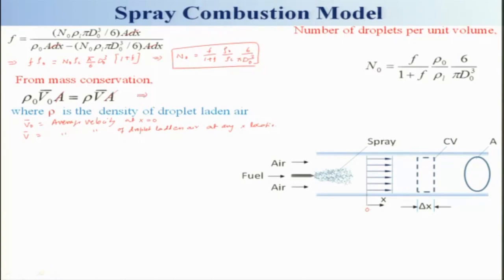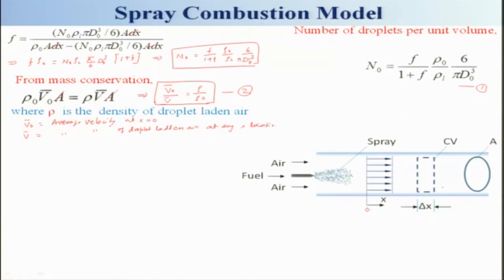From this I can get that v_avg/v₀ = ρ₀/ρ — this is equation 1. Keep in mind that the average velocity at any location will be changing; it will be increasing because the density is decreasing due to heat addition. So the average velocity at any location will be increasing along x.